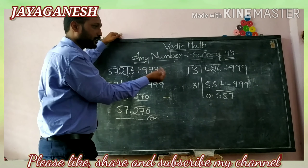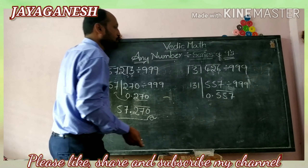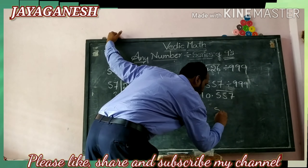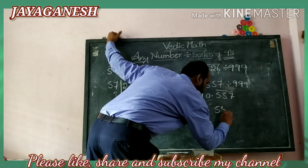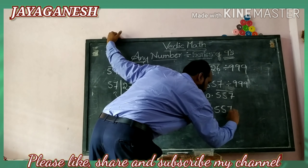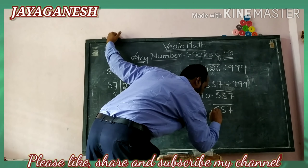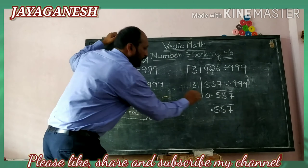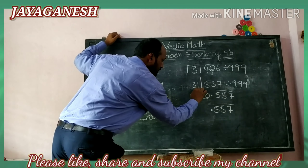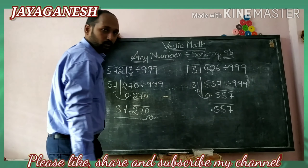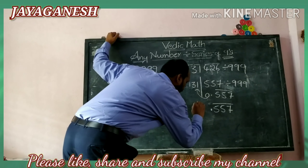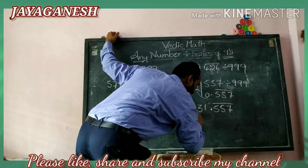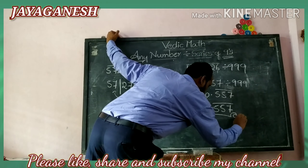Now apply the balancing rule the same way. You will get 557 bar, and you are getting a decimal here, add here. 131 plus 0 — what will happen — you will get 131. Your answer is 131.